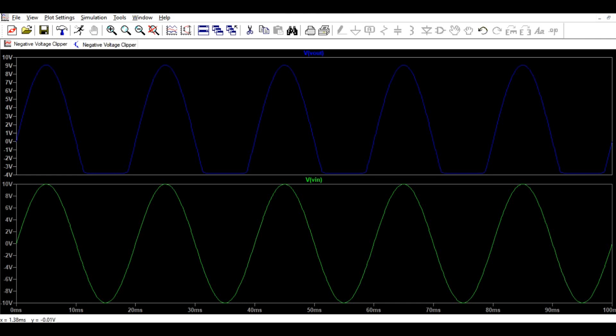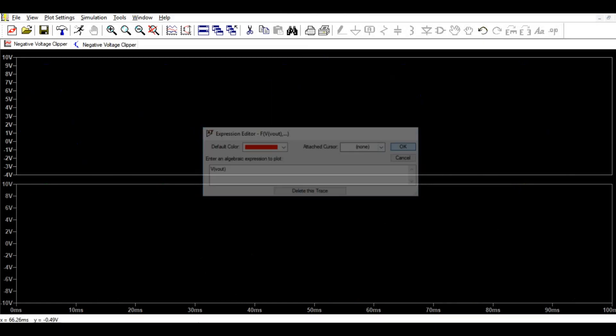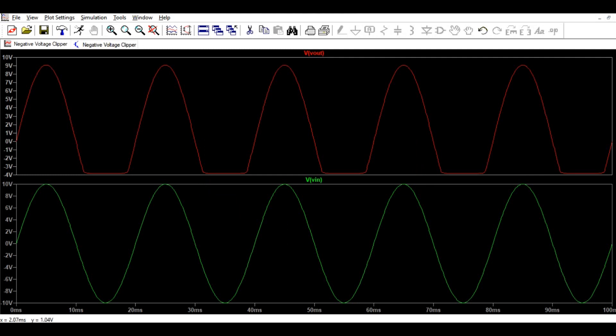for the negative half cycle after zero crossing, it still follows the input signal until it reaches minus 4 volt. After minus 4 volt it follows till here. After minus 4 volt it clips the voltage, it clips the voltage.